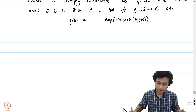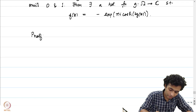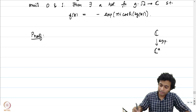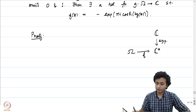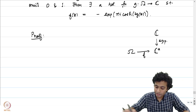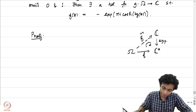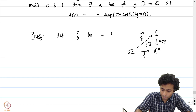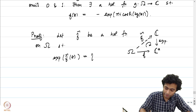Let us give a proof. The moment f omits 2 points, we are forced to have some function g such that f can be written in this manner. The first observation is that the exponential map from C to C* is a covering map, which we have already noted, and f is now a map from omega to C*. Omega being open, connected, and simply connected means there exists a lift; let us call that lift f̃. We do not need the uniqueness part — one lift suffices. Let f̃ be a holomorphic function on omega such that exp(f̃(z)) equals f(z).